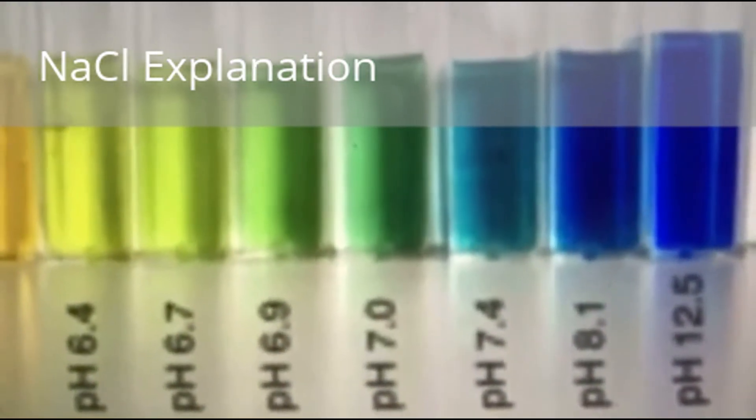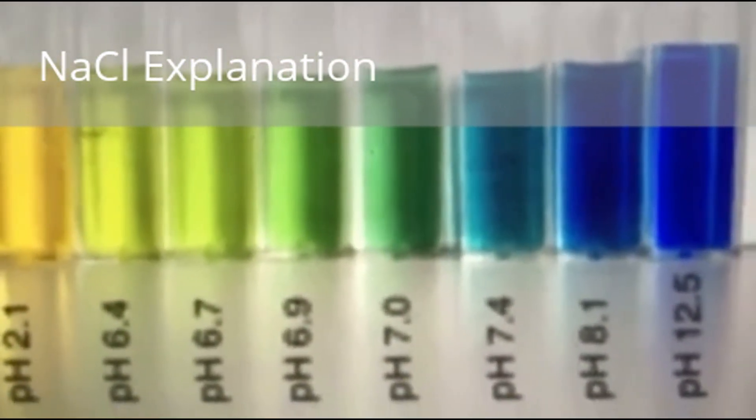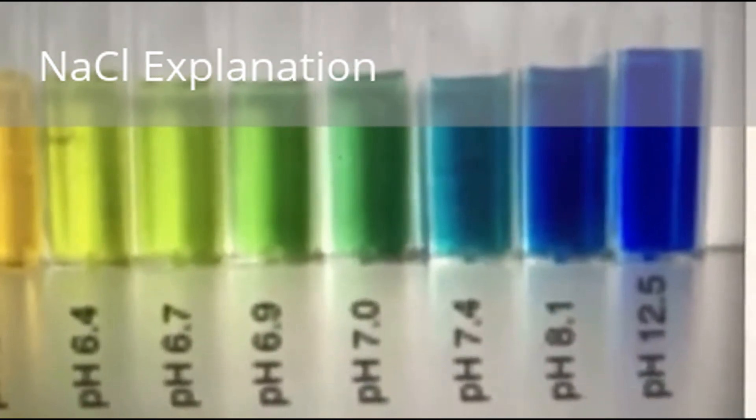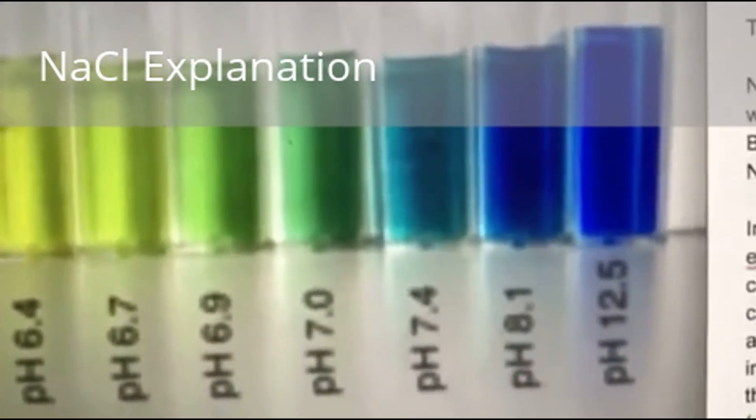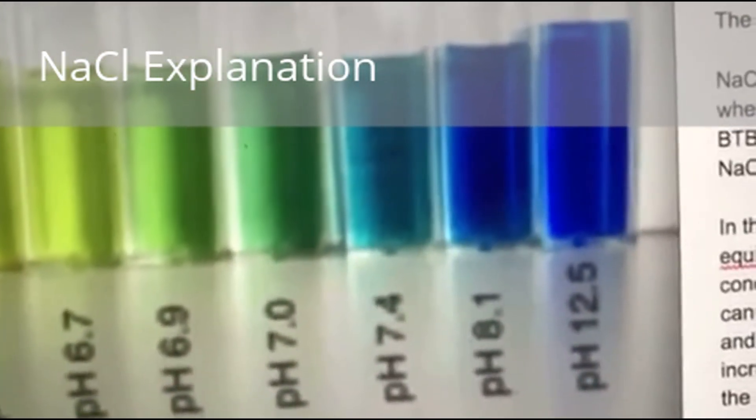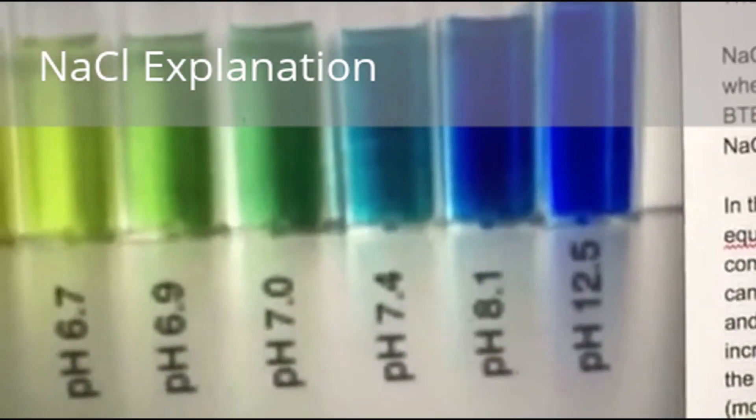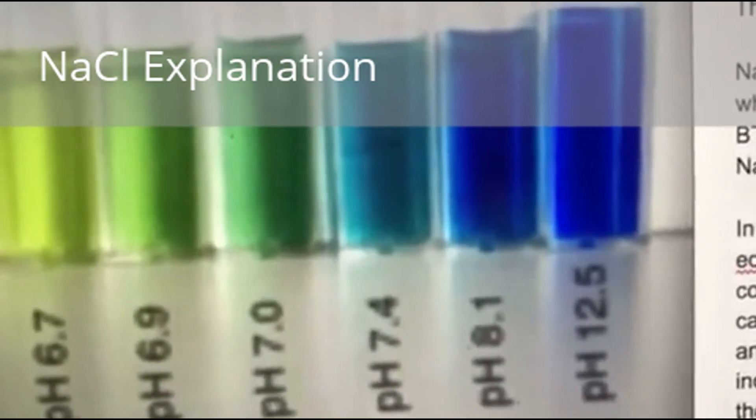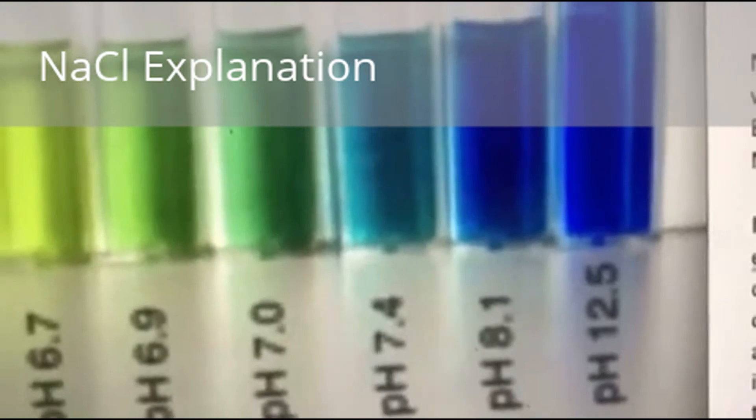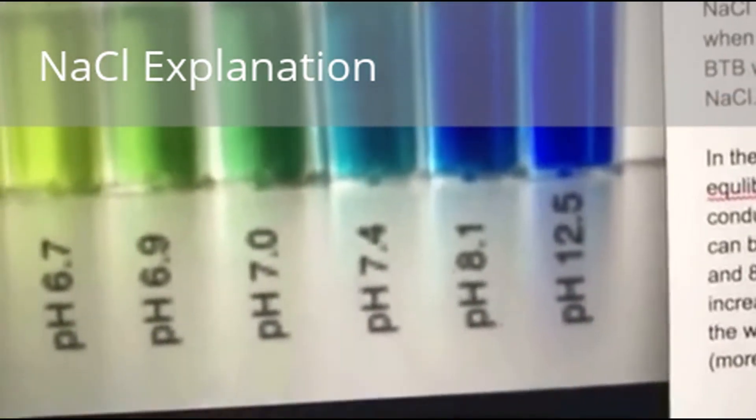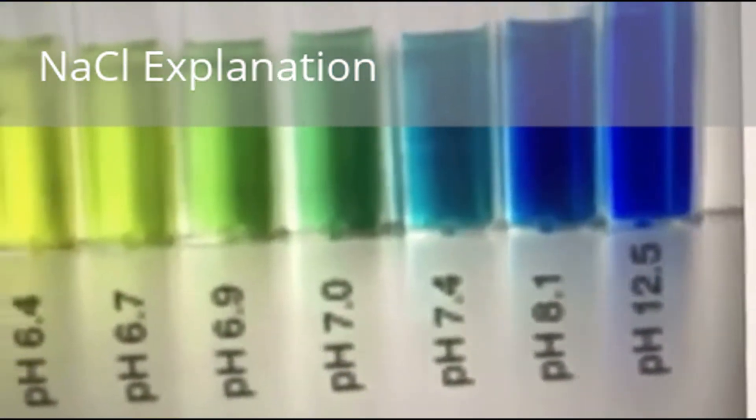Lastly, we will talk about the effects of NaCl on the BTB solution. NaCl is an ionic salt, which is neutral, so it has little to no effect on the reaction. We observed in the experiment that when we added one to three drops of NaCl to the BTB, there was no color change. This means that the pH of BTB was not affected.